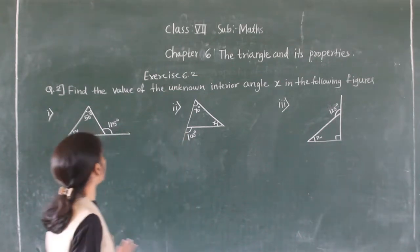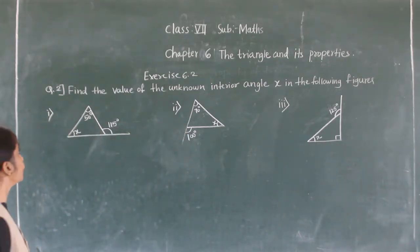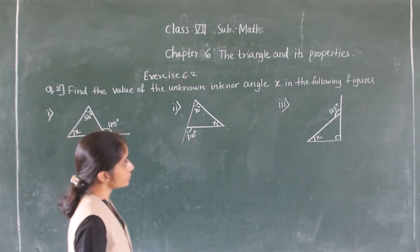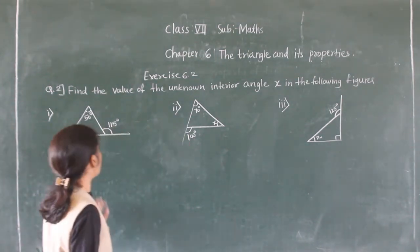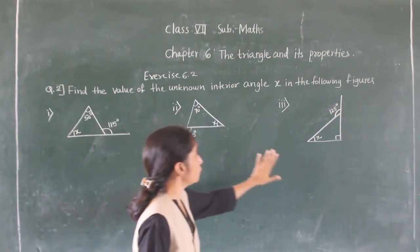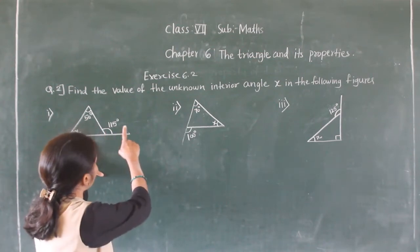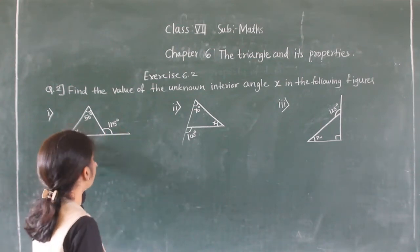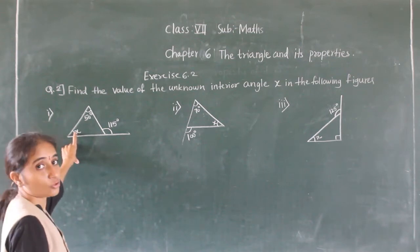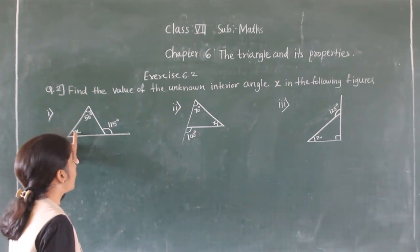Hello everyone. Let's start question number 2 from exercise 6.2. Find the value of the unknown interior angle in the following figures. Figures are given, and we have to find the unknown interior angle x — the angle we don't know.